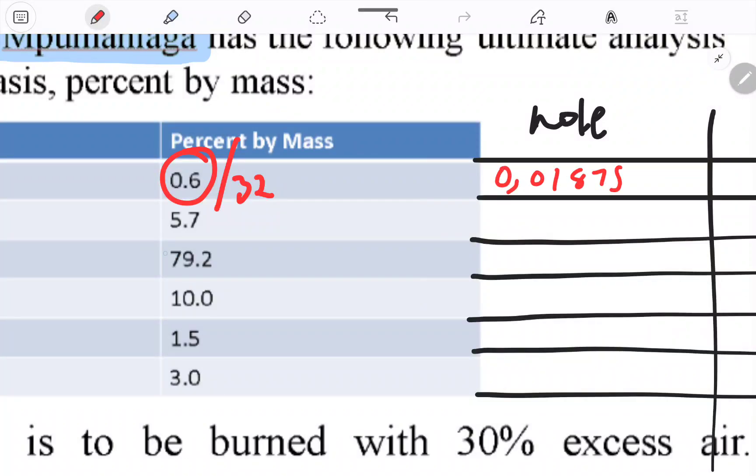If I take the second one divided by its molar mass, which is 2, I get 2.85 for hydrogen.